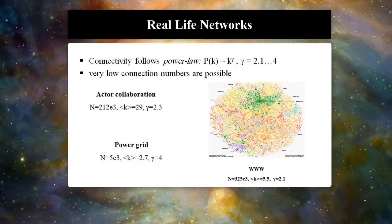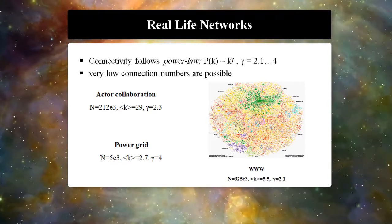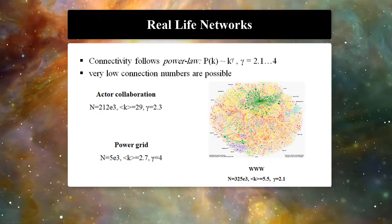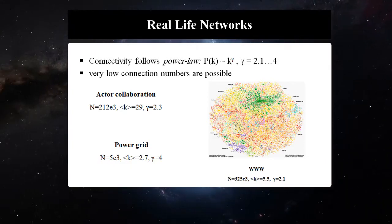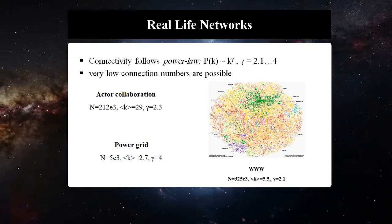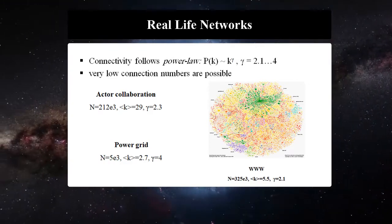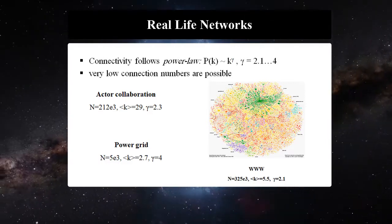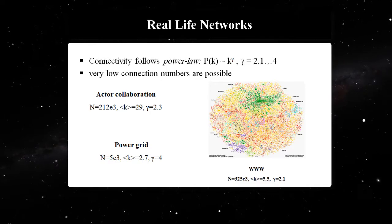The degree distribution of many real-life networks follows a power law. This distribution is usually so skewed that it makes sense to plot the histogram in log-log form, where the characteristic distribution then becomes clear. Very low degrees are possible, and there are few nodes with a large number of connections — this is the hierarchy.